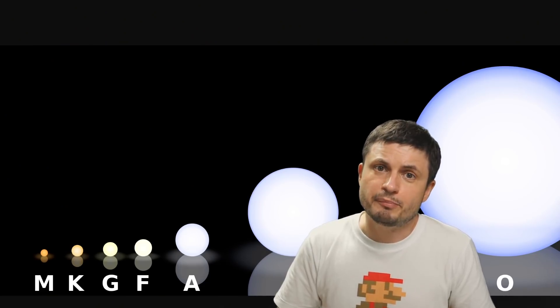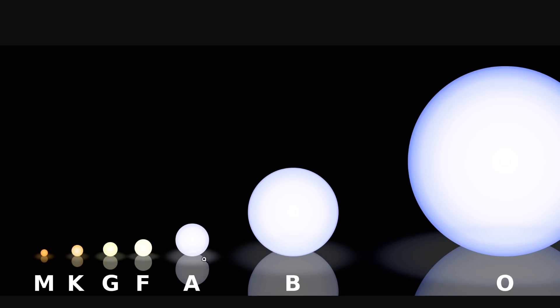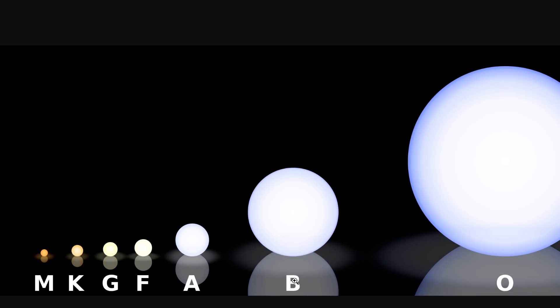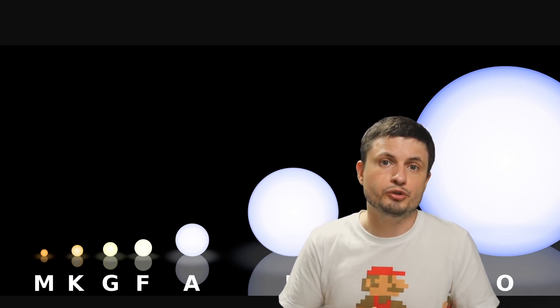For type 1 supernova will always happen when a white dwarf becomes too massive, with generally stars that are slightly less massive than about 9 masses of the sun being responsible for producing white dwarfs eventually. But some of the more massive stars such as the B type or the O type stars, especially stars that are more than 10 masses of the sun, will pretty much always explode in type 2 supernova, with some minor exceptions.